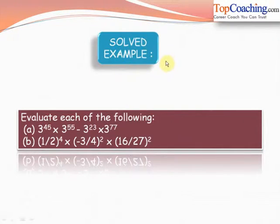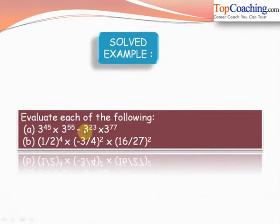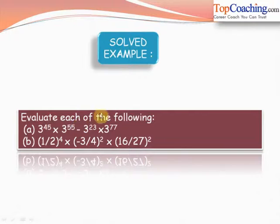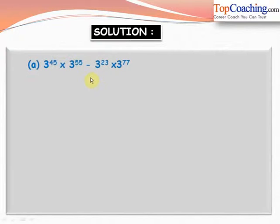Let's solve an example: evaluate part a — 3 to the power of 45 into 3 to the power of 55 minus 3 to the power of 23 into 3 to the power of 77 — and part b — 1 by 2 to the power of 4, into minus 3 by 4 to the power of 2, into 16 by 27 whole squared.